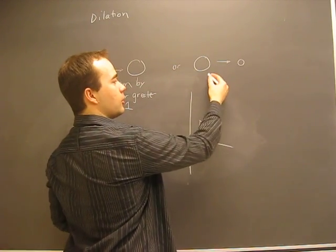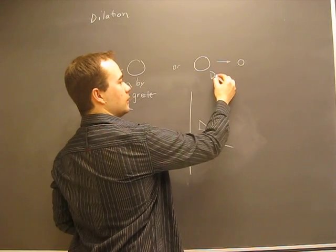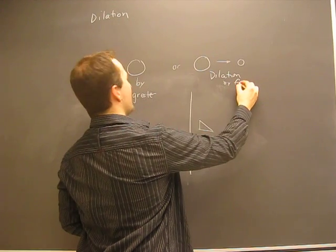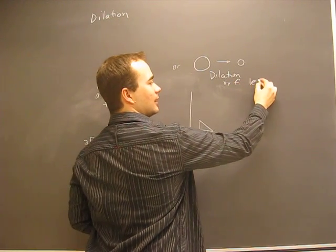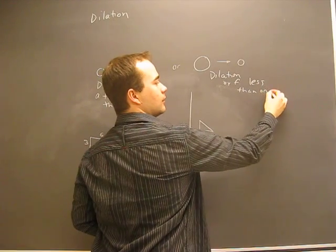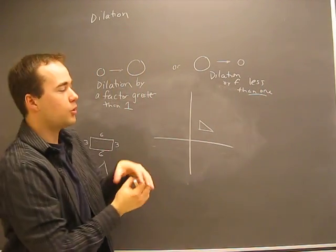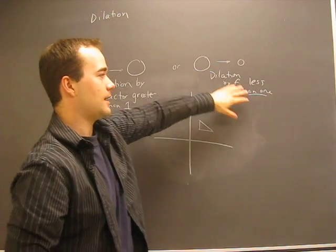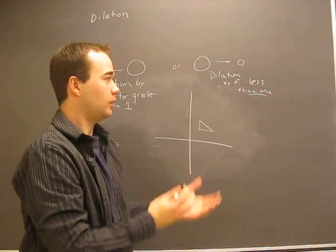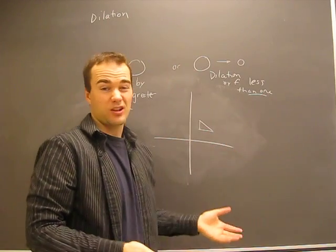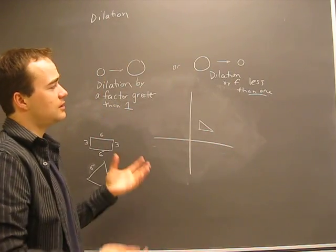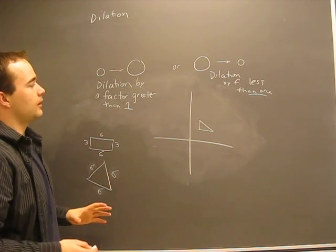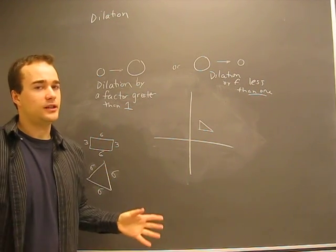Likewise, going from bigger to smaller is called a dilation by a factor less than one. Okay? So, when you go from bigger to smaller, if you had something and you multiplied it by something that's less than one whole, you're going to end up with something smaller. I mean, that's pretty simple, but make sure you just put this down in your notes here just to kind of get an idea. Okay? So, that's really all dilation is. There's nothing to be afraid of or anything like that.